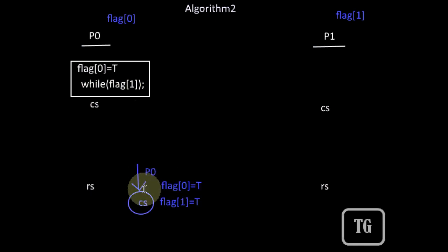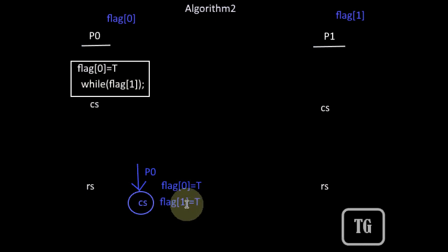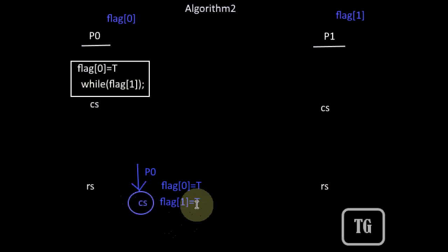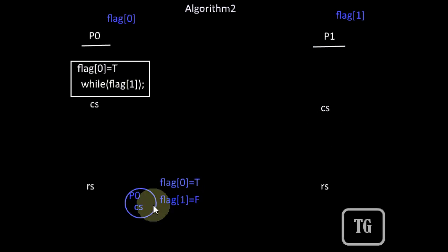So if P0 needs to enter the critical section, it will set its flag to true. If flag[1] is also true at the same time, P0 will wait without entering the critical section. At any time when flag[1] is false, P0 can enter the critical section.